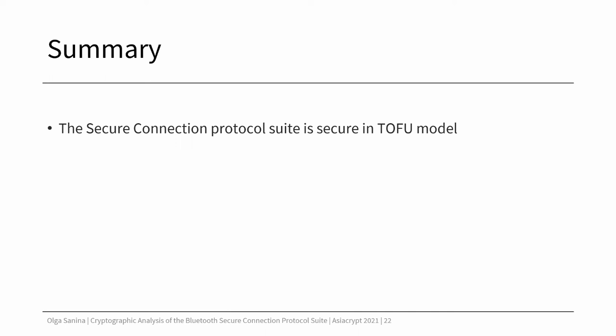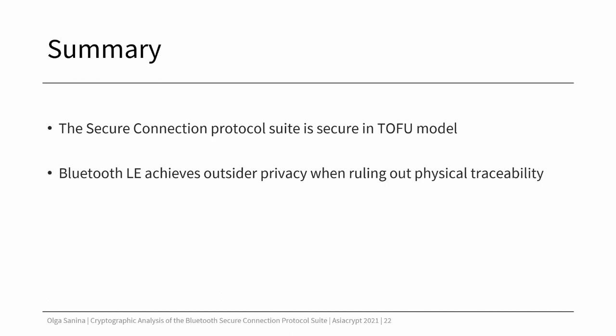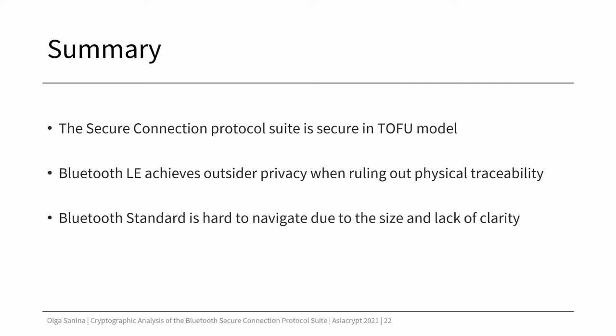Note that this result does not rule out the linkability of devices based on their physical characteristics, such as the time at which the new address is generated or the strength of the signal. Let's wrap up the talk. We showed that the secure connection protocol suite provides basic common key requirements in the trust-on-first-use model under reasonable assumptions. We showed that Bluetooth Low Energy achieves outsider privacy when we rule out physical traceability. We also found that the Bluetooth standard, called the core specification, is extremely hard to navigate through — it has a huge size of 3,000 pages and a lack of clarity in terminology. For example, when it comes to desired security properties, the standard is rather vague because the requirements are not specified or are subsumed under imprecise terms.